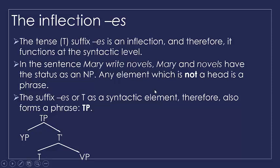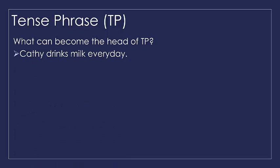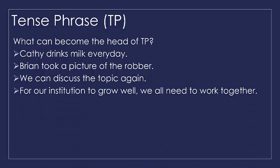Now let's look at the nature of a tense phrase. What can become the head of a TP? We have a sentence like 'Kathy drinks milk every day,' and 'Brian took a picture of the robot' — here we have 'took' from -ED and 'take.' Then 'We can discuss the topic again with Ken.' And there is also the construction 'For our institution to grow well, we all need to work together.' The focus is the phrase 'for our institution to grow well.'